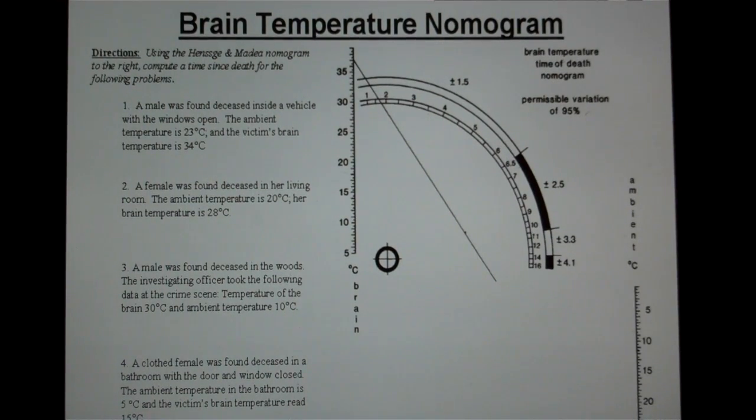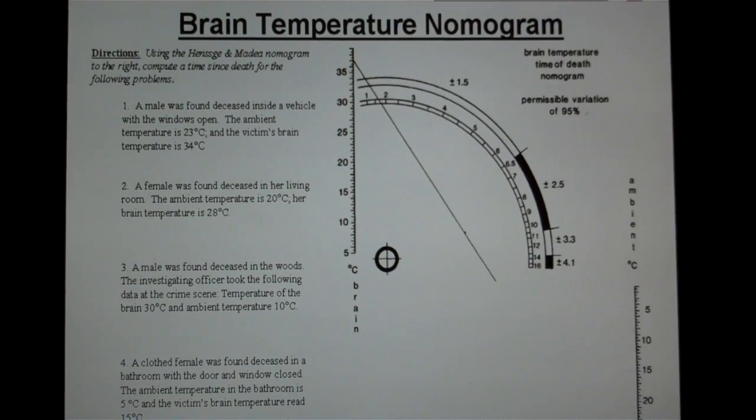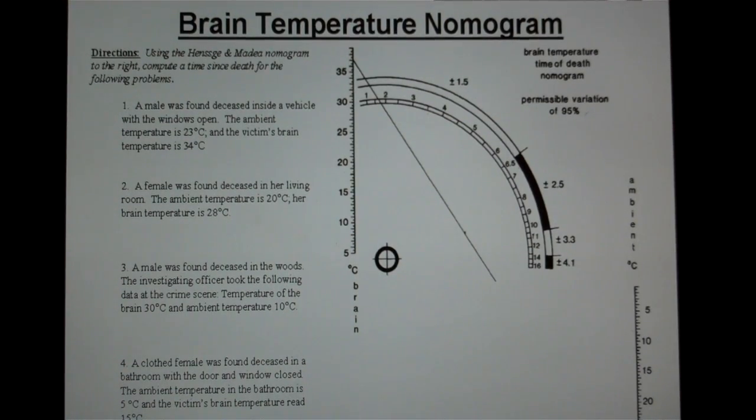So this is another training video on nomograms. Last time the videos dealt with ambient temperature and rectal temperature. This nomogram deals with brain temperature and ambient temperature.